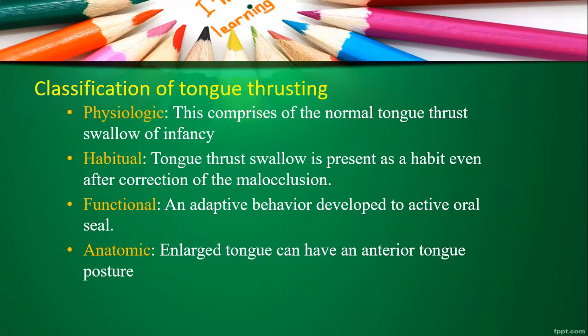One classification of tongue thrusting habit includes: physiologic, habitual, functional, and anatomic. Physiologic comprises the normal tongue thrust swallowing of infancy, which will gradually change as the teeth erupt — the anterior teeth erupt — and once the child has proper solid food.